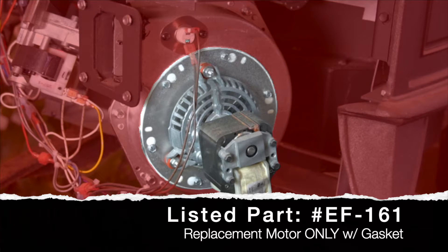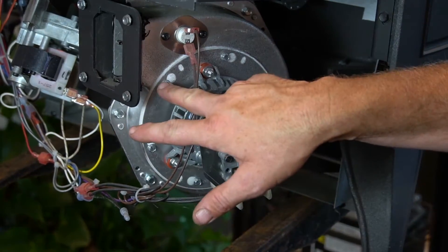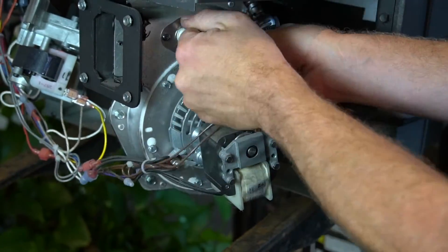The most common replacement is just the motor, and that's what's shown here. It's held in with six screws that go around the perimeter of the hub.